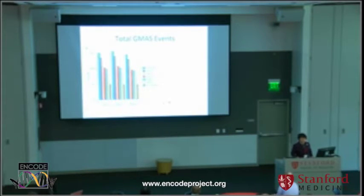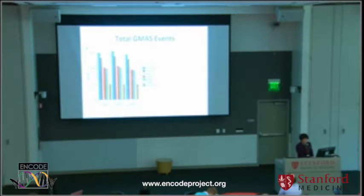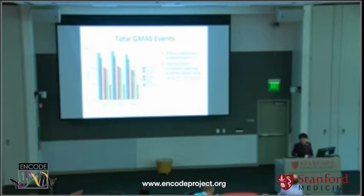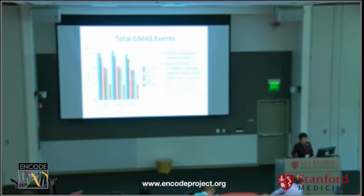We applied both the intronic and exonic methods to a number of ENCODE cell lines and identified 622 SNPs predicted as regulators of alternative splicing. We did randomization to control an estimated FDR of about 3%, and experimental validation using splicing reporter assays in HeLa cell lines. Our validation rate is 80%, and if we use an additional cell line accounting for cell-type-specific splicing factors, our validation rate can be as high as 90%.